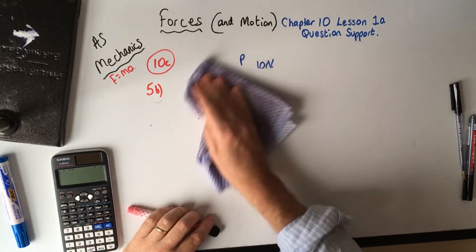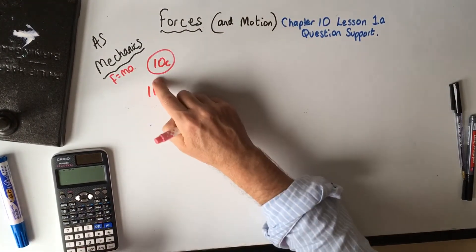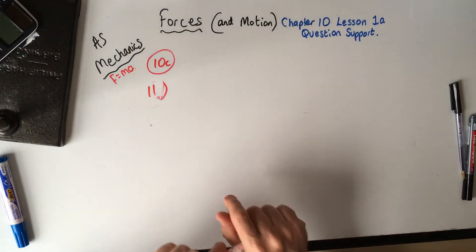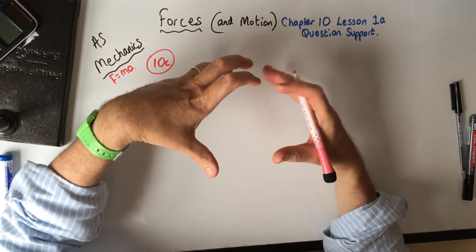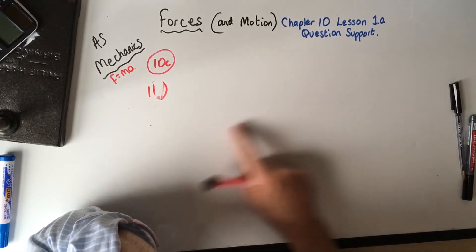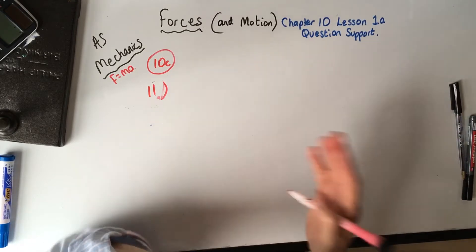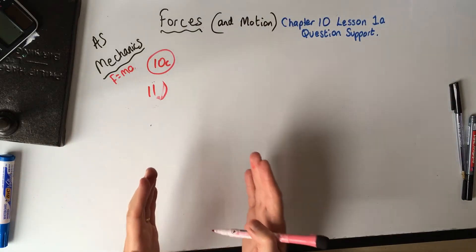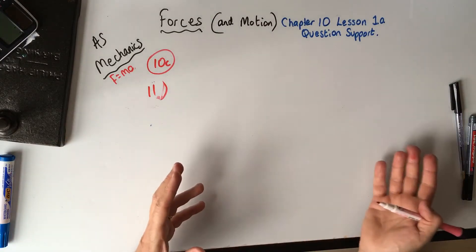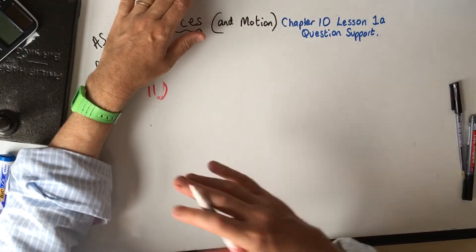I wanted to go through question 11 from exercise 10C because it combines F equals MA with equations of motion. When things start accelerating — particles, vans — their velocity changes over time and they travel distances. Once we've worked out the acceleration the force is producing, we can apply our equations of motion to find how far it travels, how long it takes, what the initial velocity is, and so on.